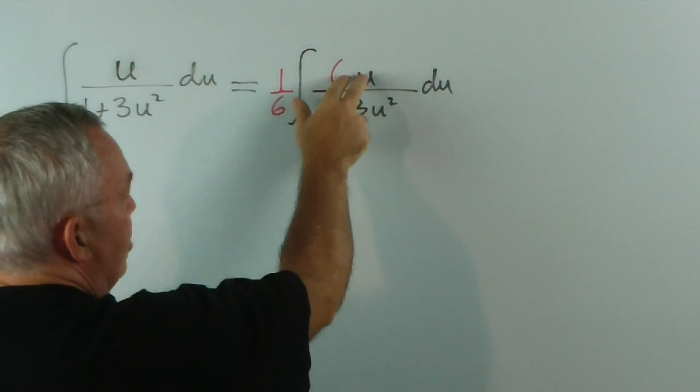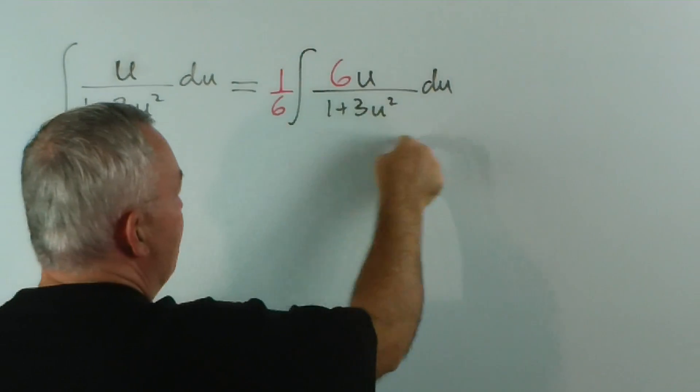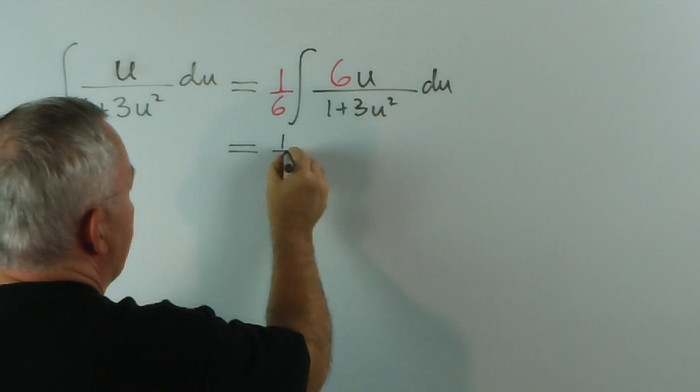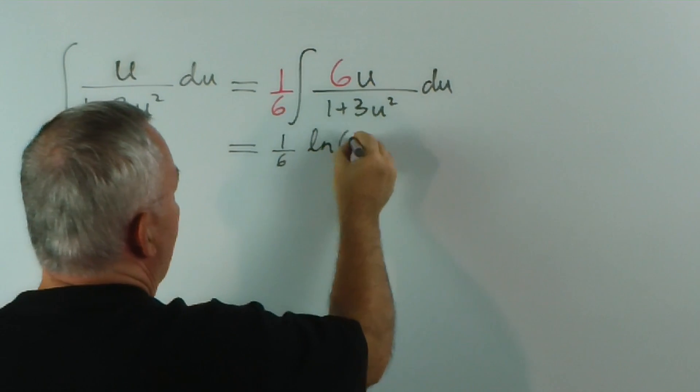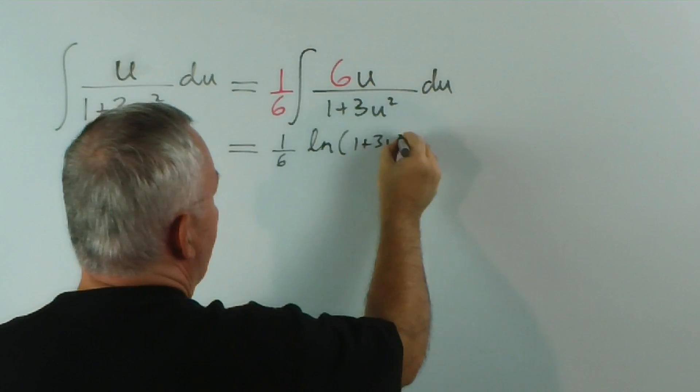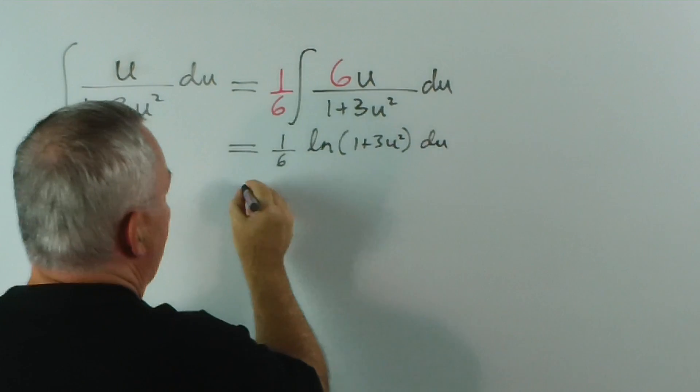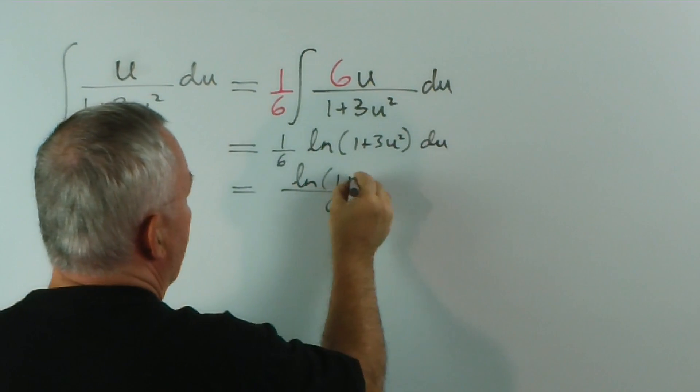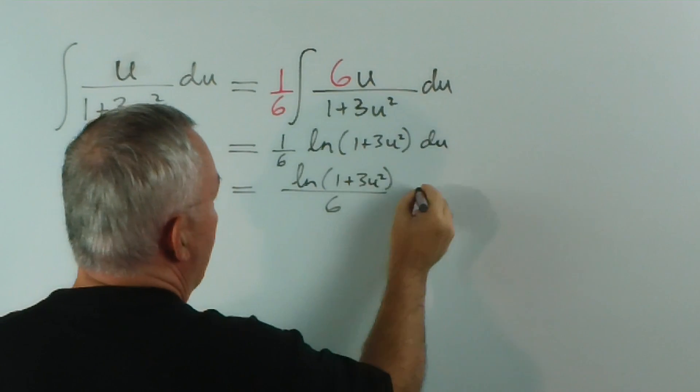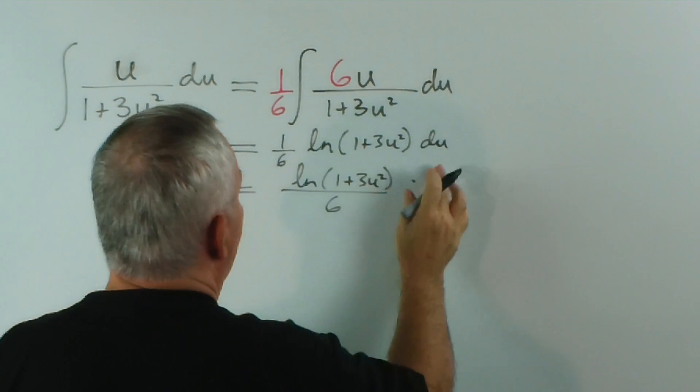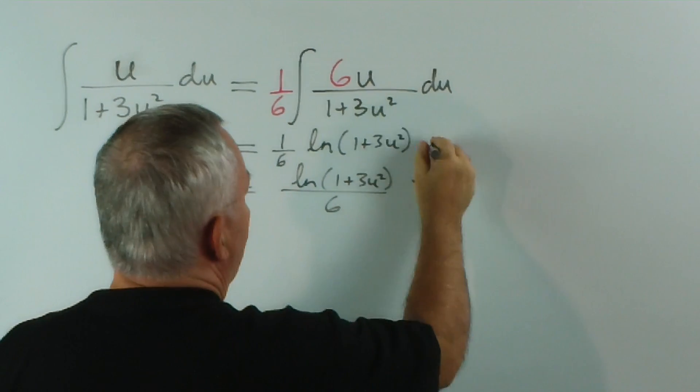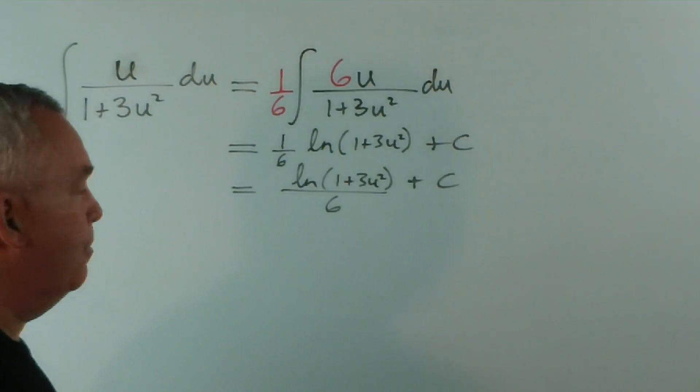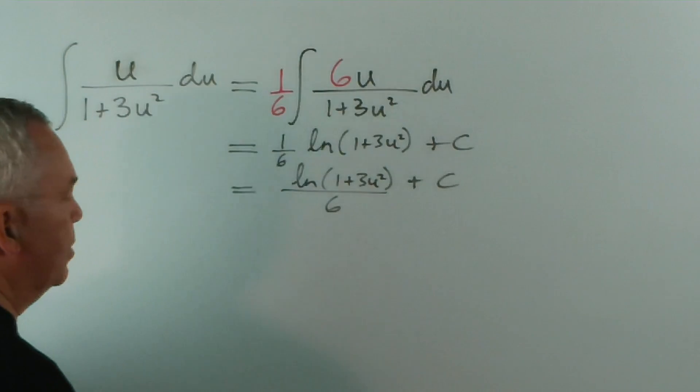Derivative of this is 6u, which is exactly there. This is the exact pattern we have for a logarithmic function. So, the answer is 1 sixth log 1 plus 3u squared du, which I like to write as the logarithm of 1 plus 3u squared over 6. Oh, sorry, I'm really not concentrating... there we go... plus constant. Again, constant because we have indefinite integrals.